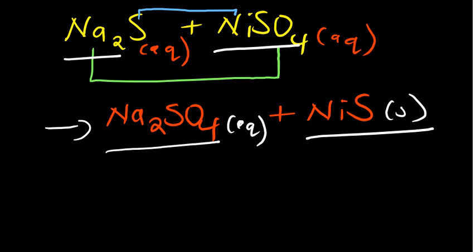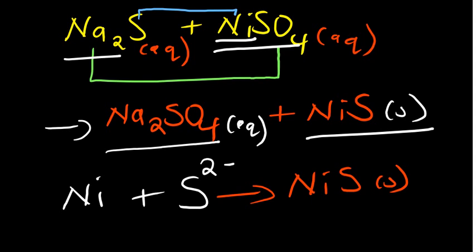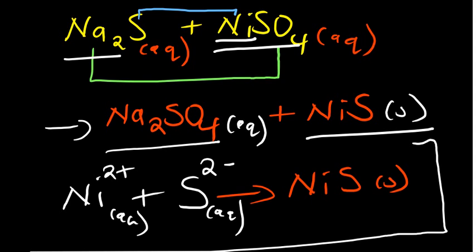Whenever they ask you to write a net ionic equation of such a reaction, the net ionic equation shows what is going to be produced — which is the precipitate, the insoluble salt. In this case, it's nickel sulfite in solid state. What reacted to form it? Nickel (charge 2+) was combining with sulfite (charge 2 minus). These are in aqueous states. So that is the net ionic equation of this precipitation reaction.